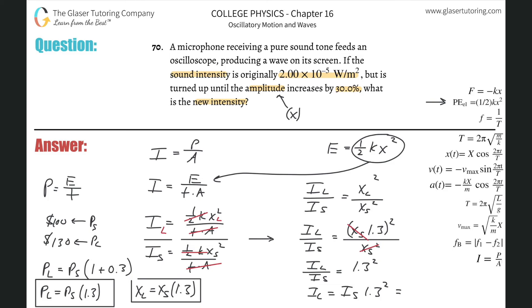Now all you have to do is simply just plug this in. So the small intensity, as they gave us, was 2.00 times 10 to the minus fifth, and then that's going to be multiplied by 1.3 squared. Just do that in the calculator. So this is 2 times 10 to the minus fifth multiplied by 1.3 squared, and we get about 3.38 times 10 to the minus 5. I'll write it on the upper left.